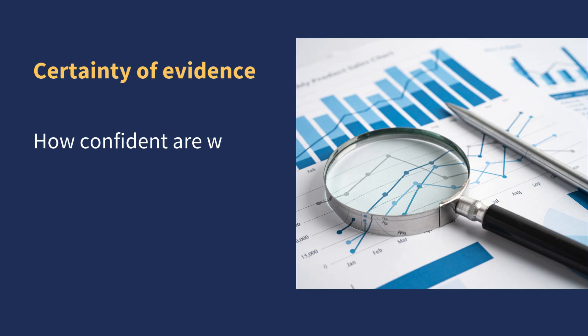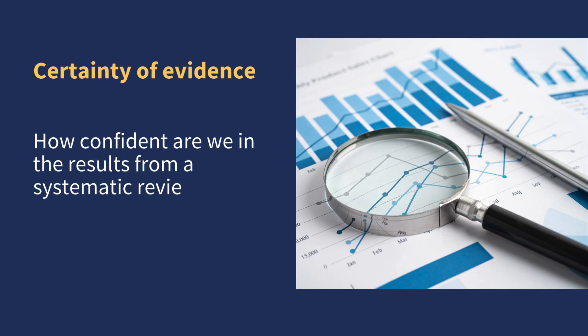What is certainty of the evidence? When we have a result from a systematic review, we need to think about how confident we are that this result is true. Authors use something called the certainty of evidence to explain how confident they are in the results. All Cochrane reviews report the certainty of the evidence for the most important results from the review.